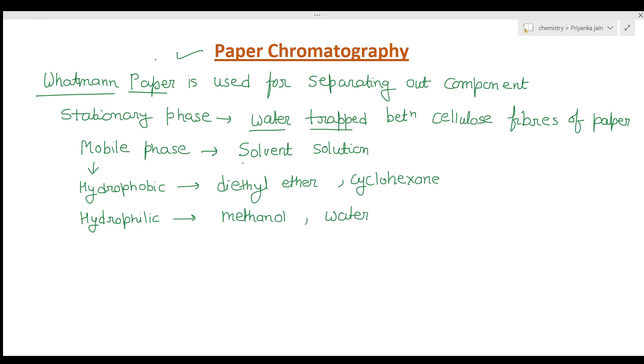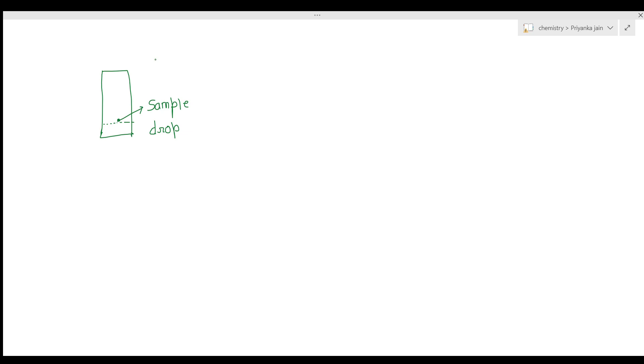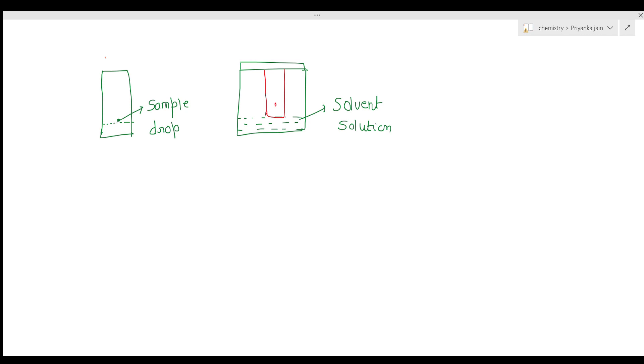Now let's look at the basic technique. We take a paper strip and put a drop of the sample solution on it, marking the position with a pencil. We then place this paper strip in a solvent chamber — a closed beaker containing the solvent solution — such that the sample dot remains above the solvent level and does not touch it.